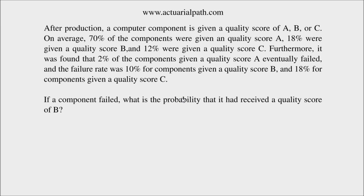After production, a computer component is given a quality score of A, B, or C. On average, 70% of the components were given a quality score of A, 18% were given a quality score of B, and 12% were given a quality score of C.